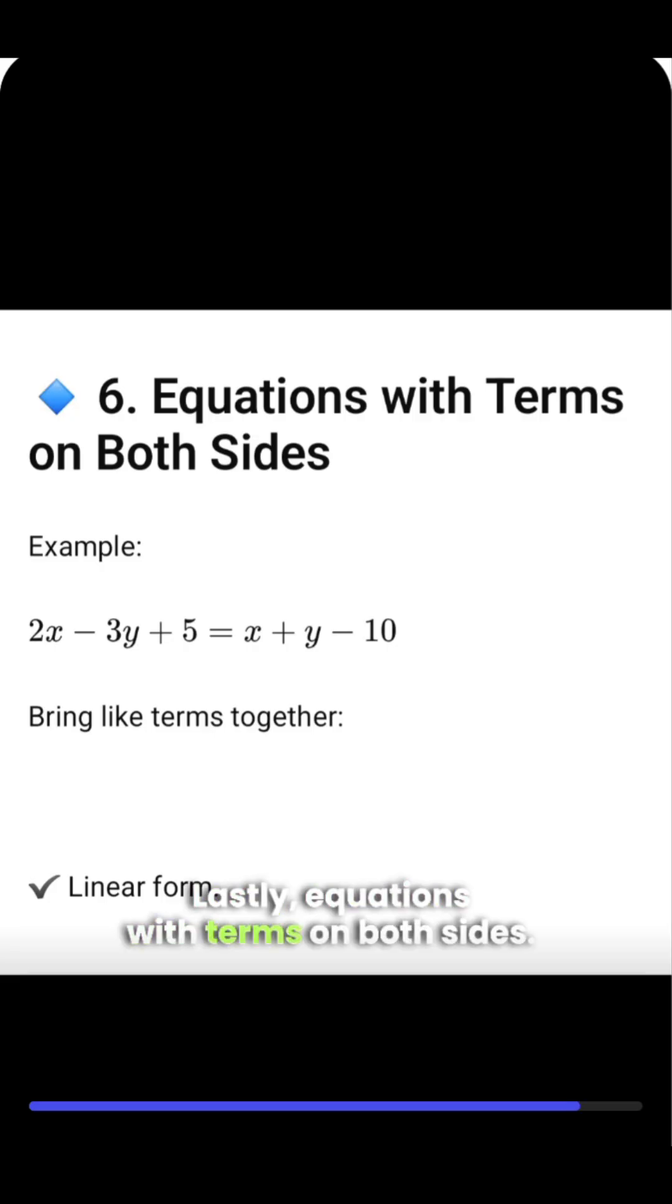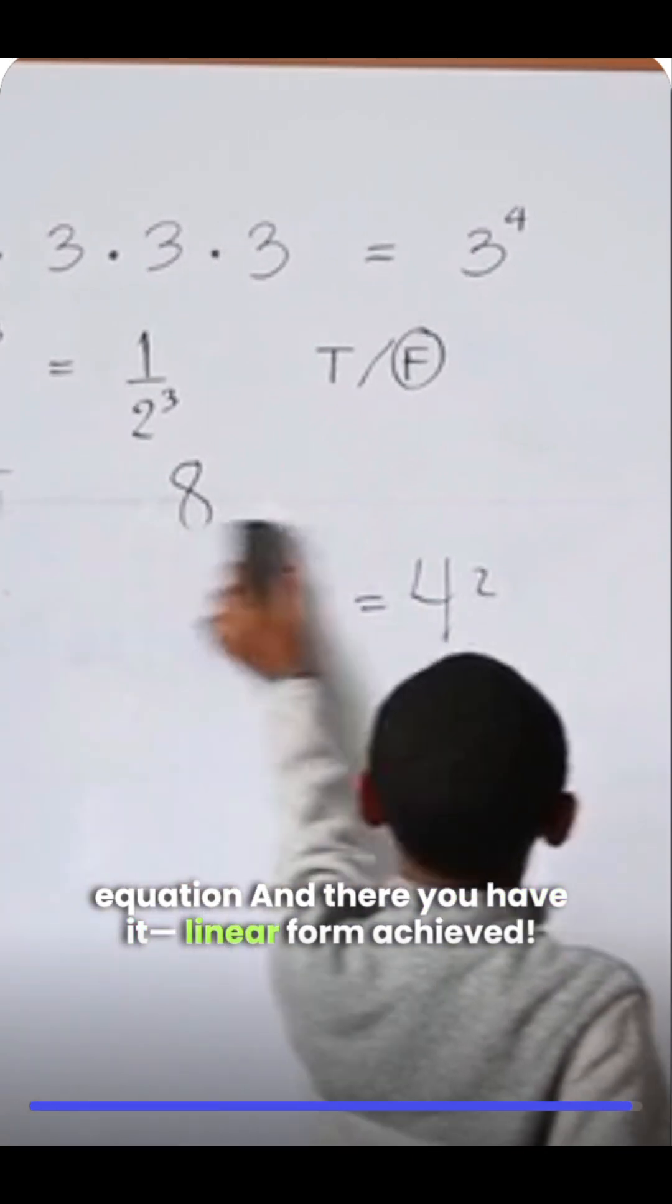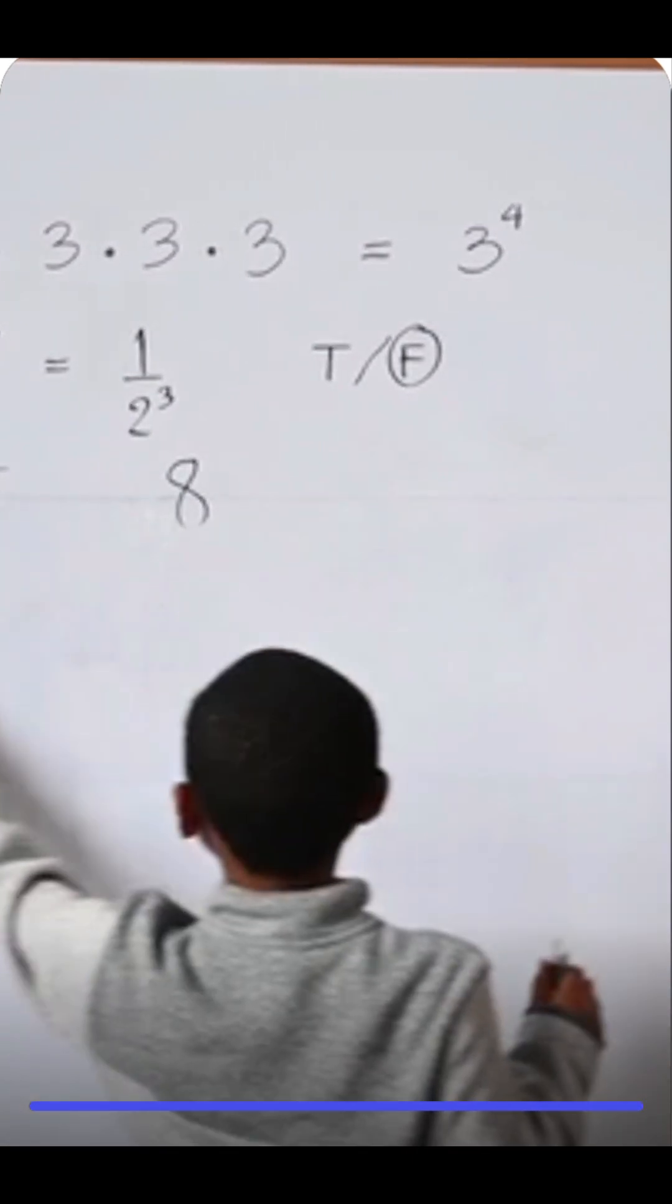Lastly, equations with terms on both sides. Bring like terms together, so we got the linear form of equation. And there you have it, linear form achieved.